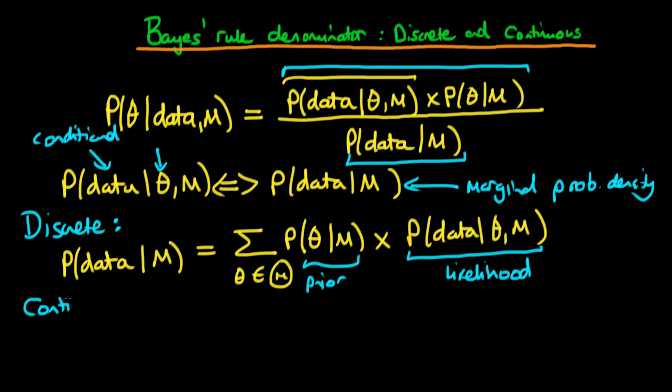What's the continuous one? Well the case where theta is continuous is just pretty much the same except now we need to deal with the continuous analog of the sum which is just an integral. So now we integrate across again all values which theta is allowed to take on and we just integrate across our prior.